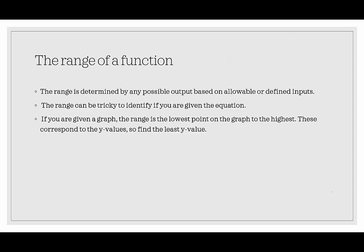The range of the function is determined by any possible output based on allowable or defined inputs. On a graph, we're looking for how low it goes — the lowest point on the graph to the highest point. The lowest point would be our minimum y value, which is the minimum of the range, and the highest point would be the greatest value in the range. If you're given the graph, the range is simply the lowest point to the highest point.